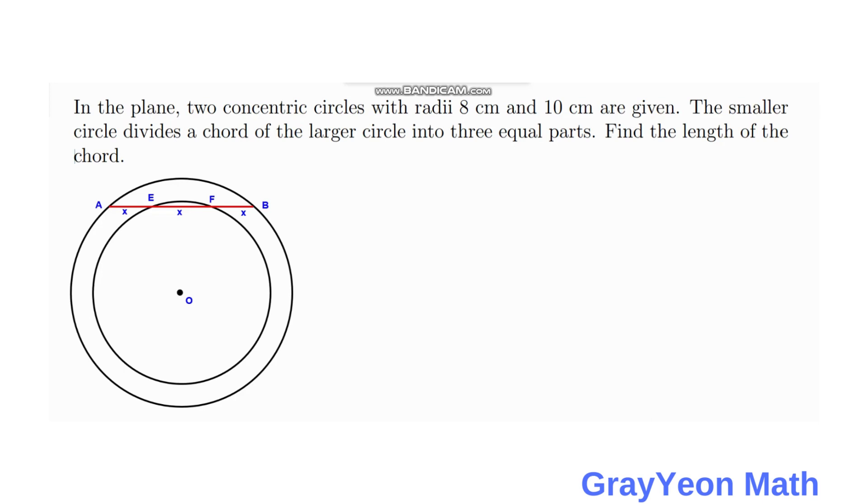Welcome to Grey Young Math. We are asked to solve for this problem. In the plane, two concentric circles with radii 8 cm and 10 cm are given. The smaller circle divides a chord of the larger circle into three equal parts. Find the length of the chord.